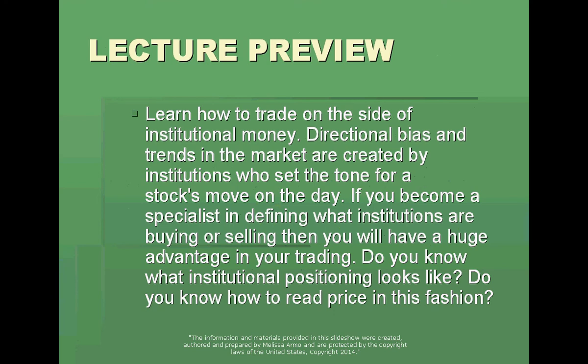The topic I'm going to talk about is one that many people ask me: how do you see that somebody's going to do this before it happens? I know how to read what institutions are doing in the price of the chart of a stock. You've got to learn how to trade on the side of institutional money if you want to make money as a trader, because directional bias and trends in the market are created by institutions who set the tone for a stock's move in the day. If you become a specialist in defining what institutions are buying or selling, you will have a huge advantage in your trading.